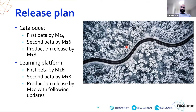Finally, the release plan. We hope the catalog will have a first beta version by month 14 of the EOSC Future project — roughly the middle of next year — followed by a second beta by month 16, and a full production version released by month 18. For the learning platform, on a slightly offset schedule: a first beta by month 16, a second by month 18, and a production release by month 20, with subsequent updates.